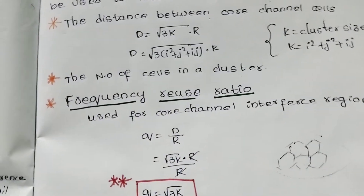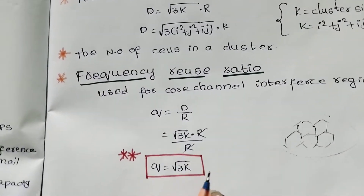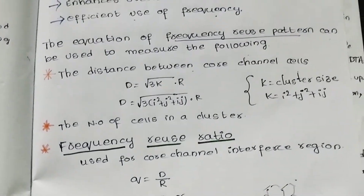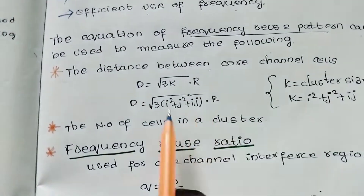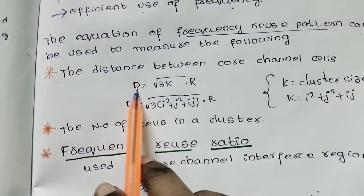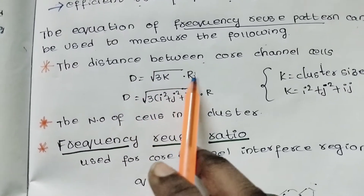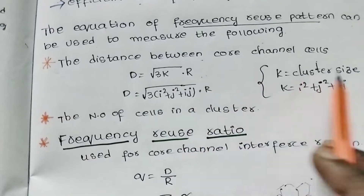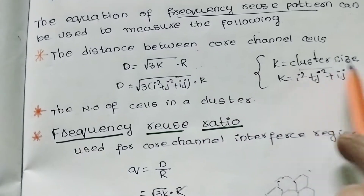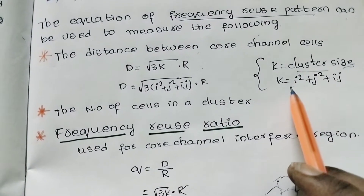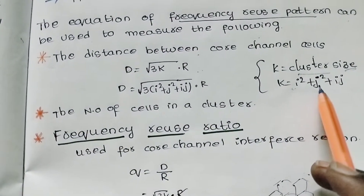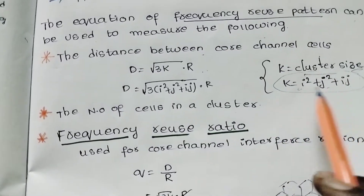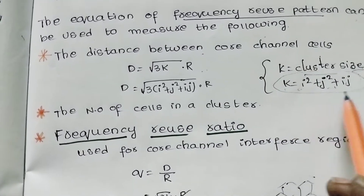There is the frequency reuse ratio. The first formula: distance D equals root 3k into r, where k is the cluster size. K is given by the formula k equals i² plus j² plus ij.